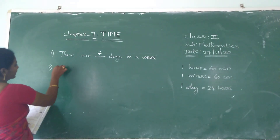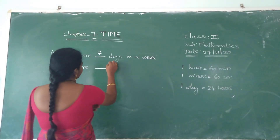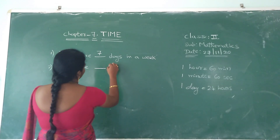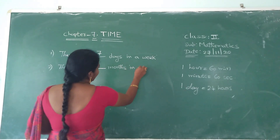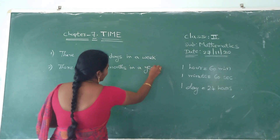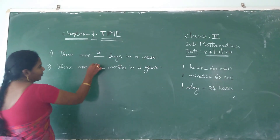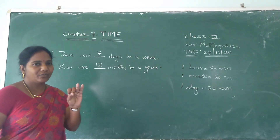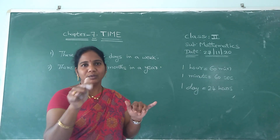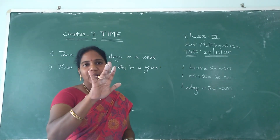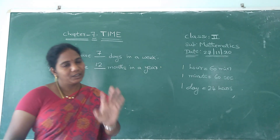Next: there are dash months in a year. In a year, how many months are there? Twelve. What are those? January, February, March, April, May, June, July, August, September, October, November and December. So totally how many months are there? Twelve.